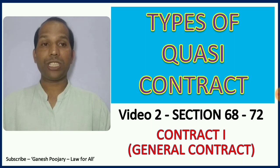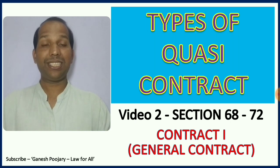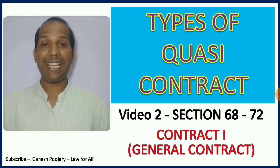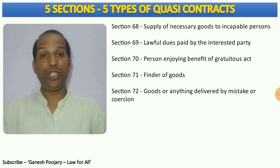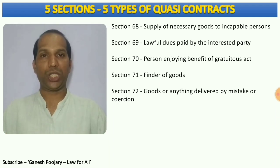Under contract law, sections 68 to 72 — five important sections — discuss different types of quasi-contract, and we are going to learn them in detail through this presentation. Let's understand which are those five sections. I am going to discuss them with beautiful illustrations and case laws.